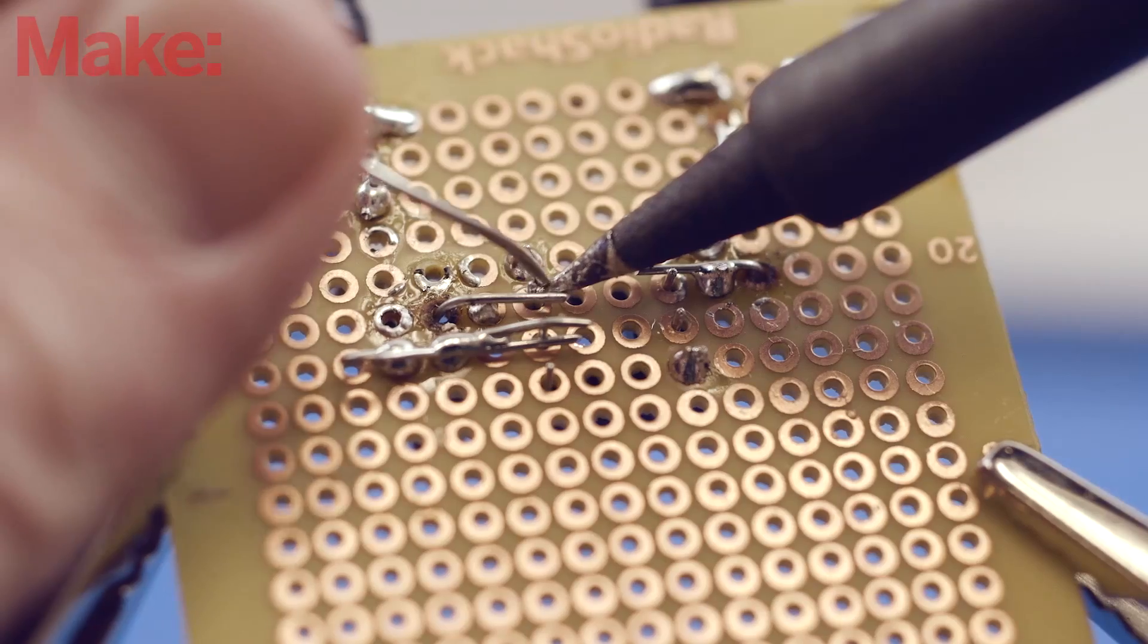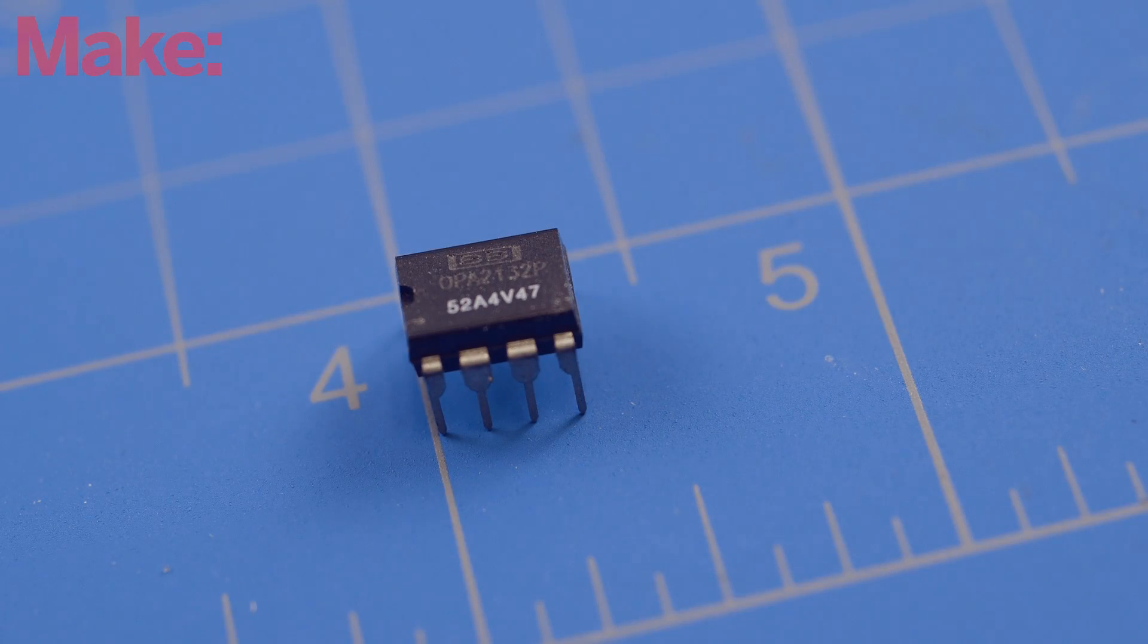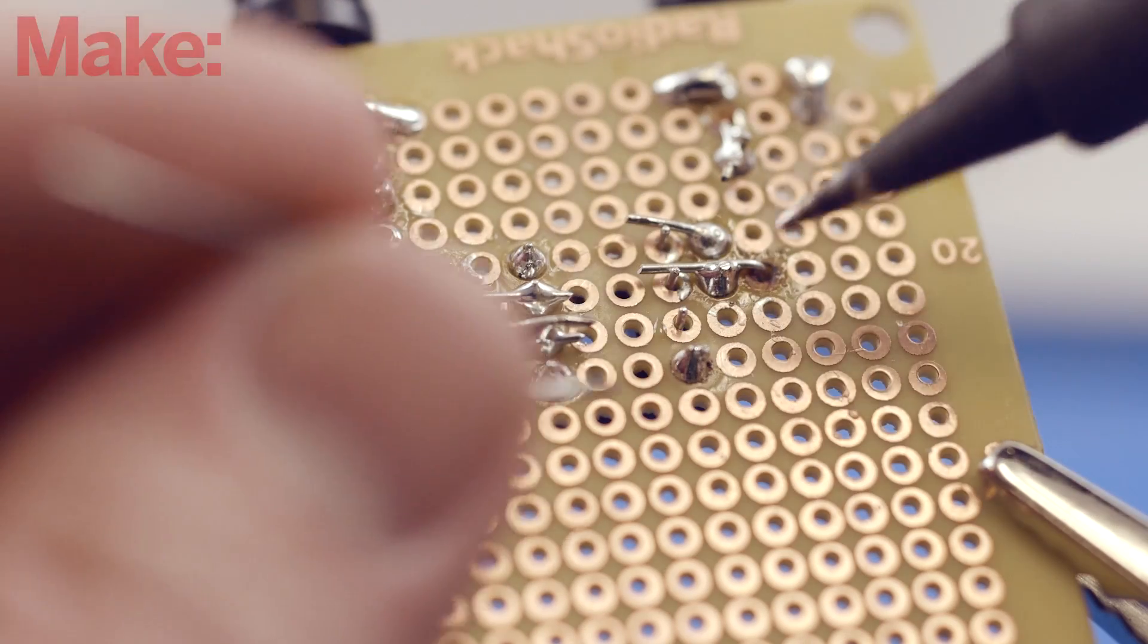Now solder the socket for the op amp. You can solder the IC directly, but using the socket lets you experiment with other amplifier circuits. Plus, it also protects the somewhat delicate amp from the heat of the soldering iron.